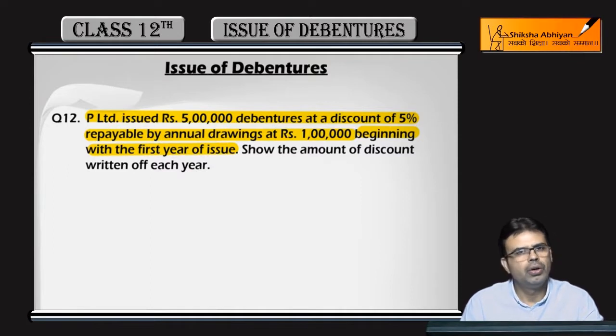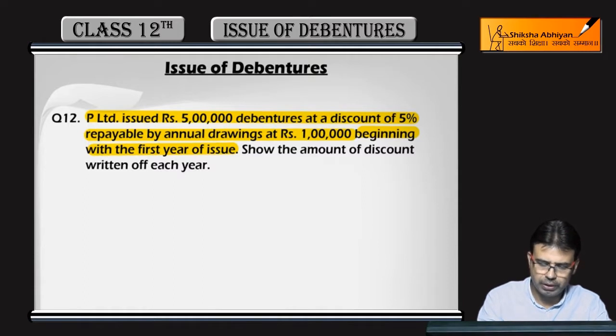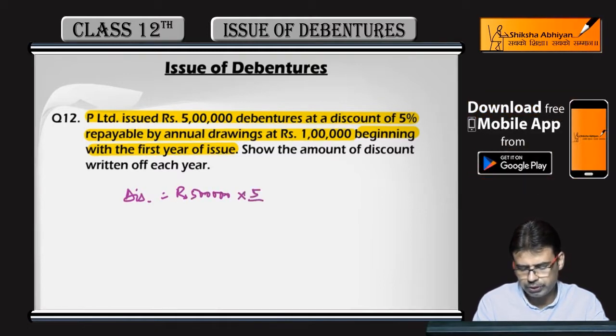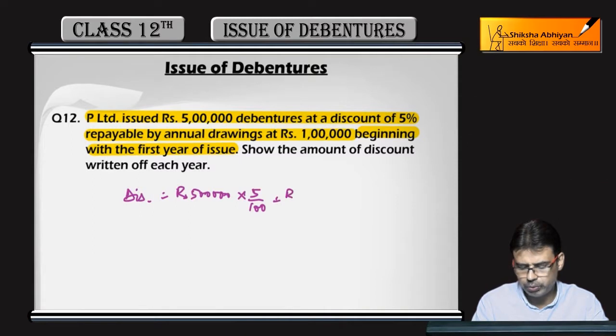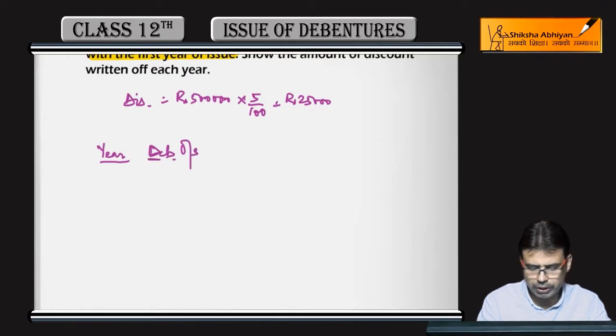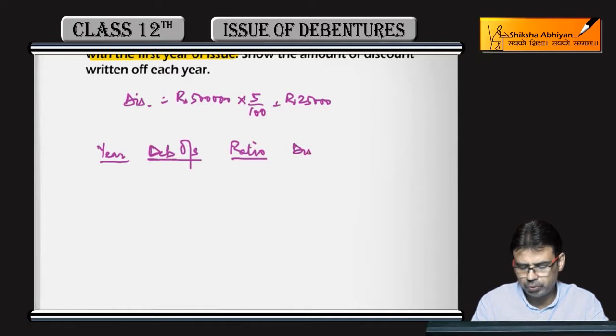This is annual drawings method and obviously in this every year the discount amount is different. The discount amount is Rs. 25,000 because it's 5% discount on Rs. 5,00,000. In this case we will make a table with columns for year, amount of debentures outstanding, proportion (that means ratio), and amount of discount to be written off.